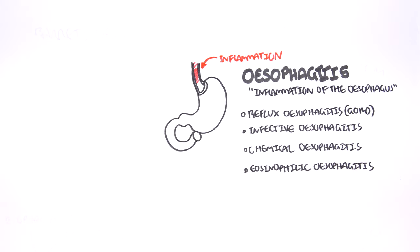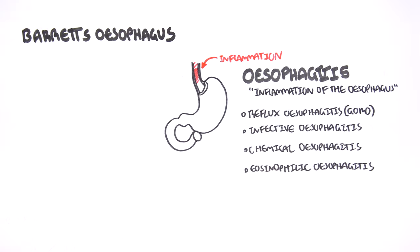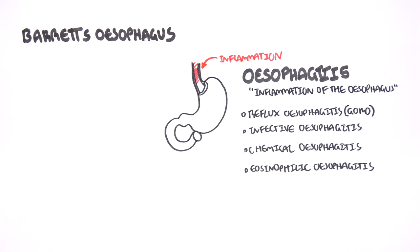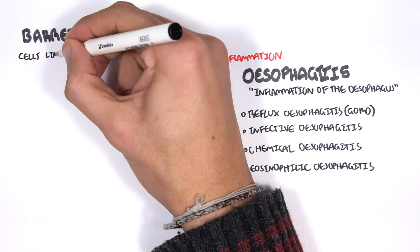While we're talking about the esophagus, let's discuss Barrett's esophagus. Barrett's esophagus is a condition where cells lining the lower esophagus change in morphology. The esophagus can be divided into three parts.